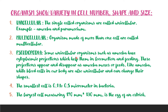Pseudopodia — some unicellular organisms such as amoeba have cytoplasmic projections which help them in locomotion and feeding. These projections appear and disappear as amoeba moves or feeds. Like amoeba, white blood cells in our body are also unicellular and can change their shape. The smallest cell is 0.1 to 0.5 micrometers in bacteria, and the largest cell measuring 170 mm by 130 mm is the egg of an ostrich.